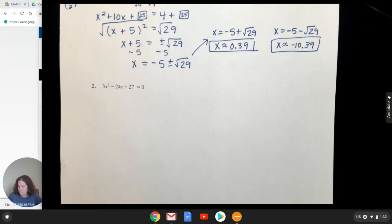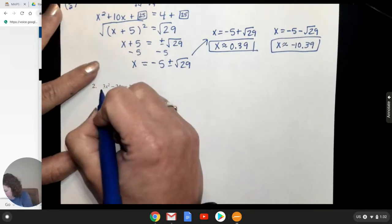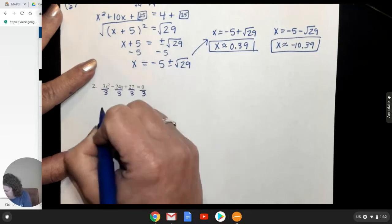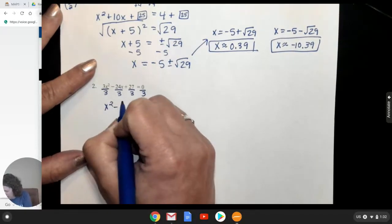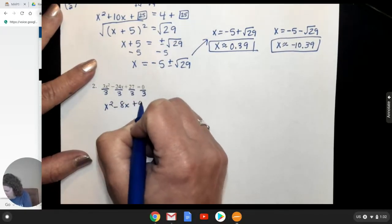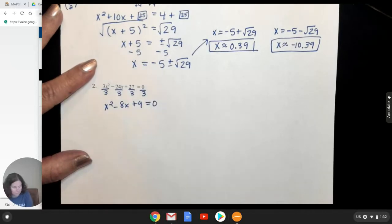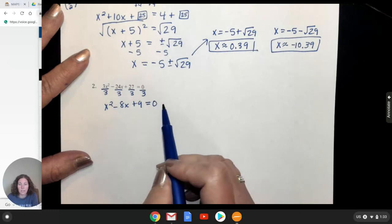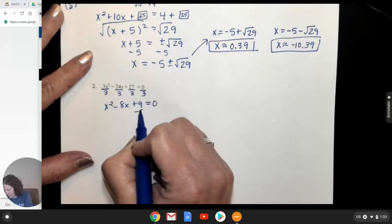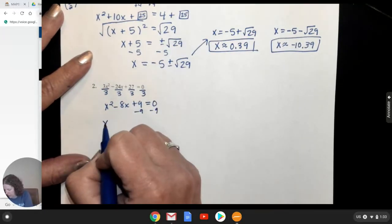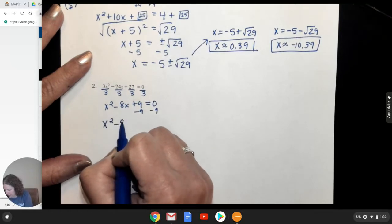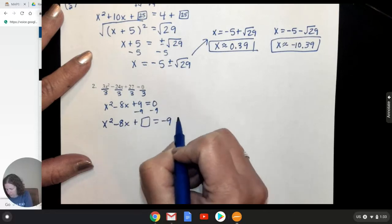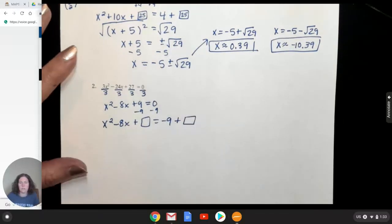All right, so we're back. Hopefully you tried this one. So the first thing you would have to do is divide everything by three. Okay. So now we're going to have to set up by subtracting the nine over and putting in our boxes. Add a square to both sides, completing the square.